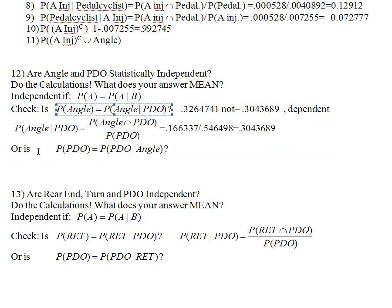We could also have checked whether the probability of PDO equals PDO given angle — but you don't need to check both directions. If one is equal, the other is equal. If one is not equal, the other will not be equal either.